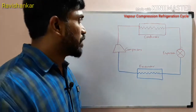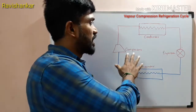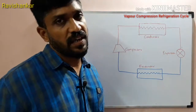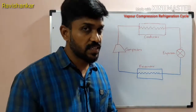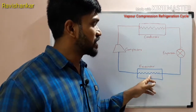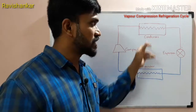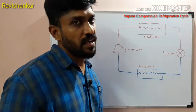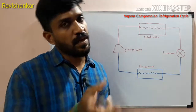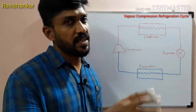For the refrigeration cycle, there are 4 units: compressor, condenser, expansion, and evaporation. We are talking about evaporation and condensation — this process is the main process. That's what we have talked about: evaporation and condensation.